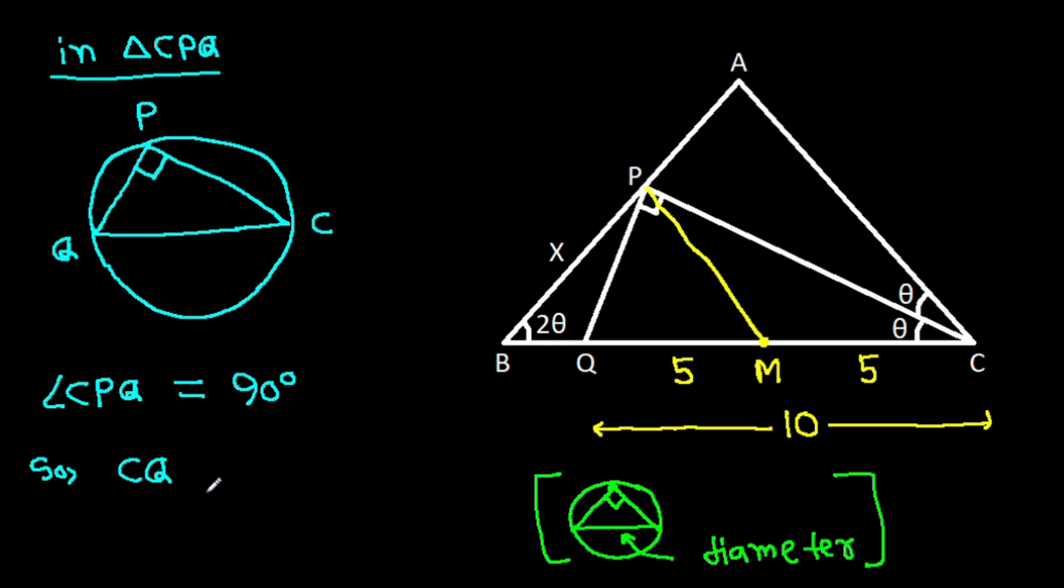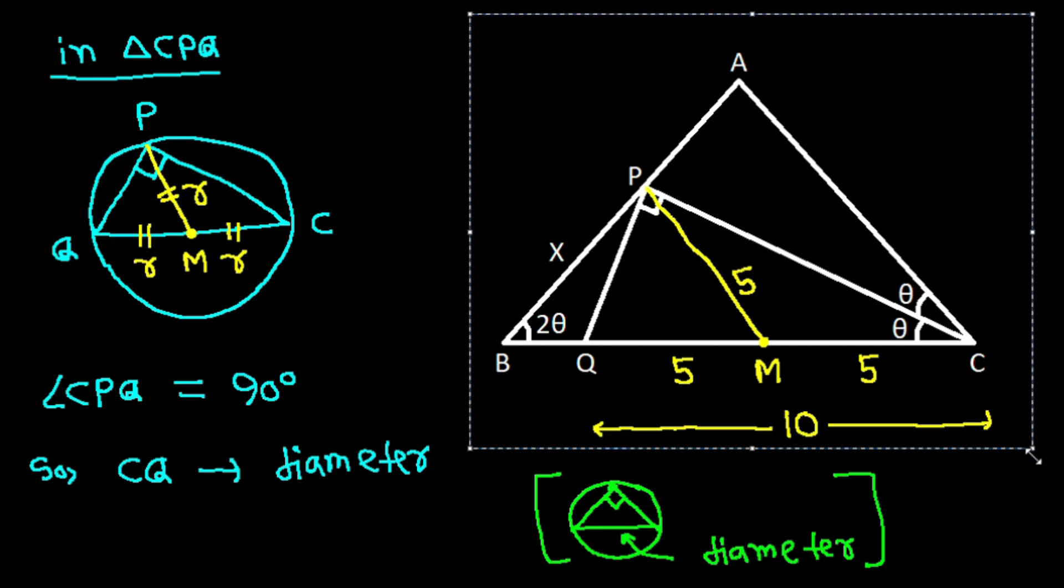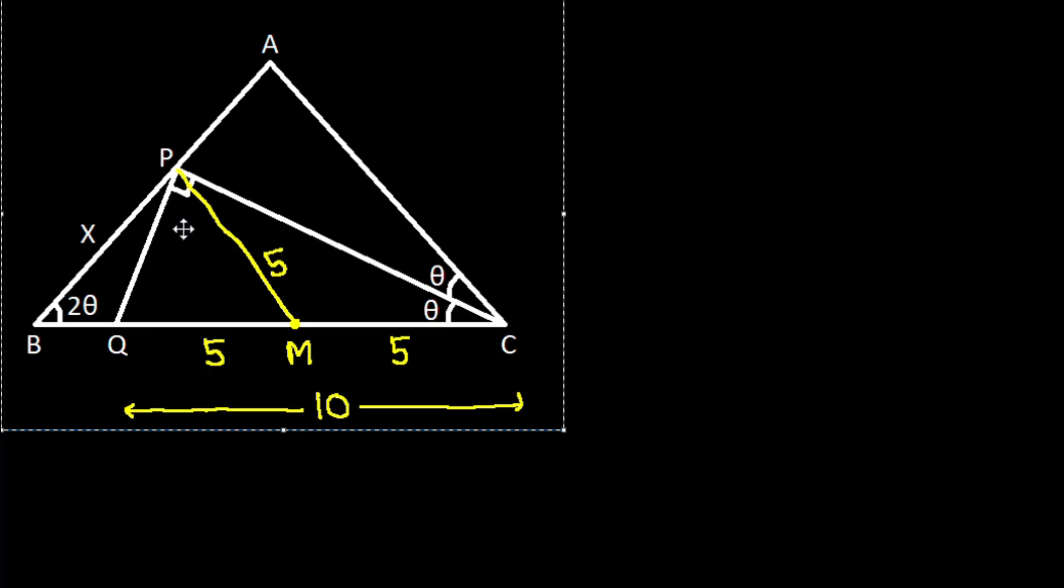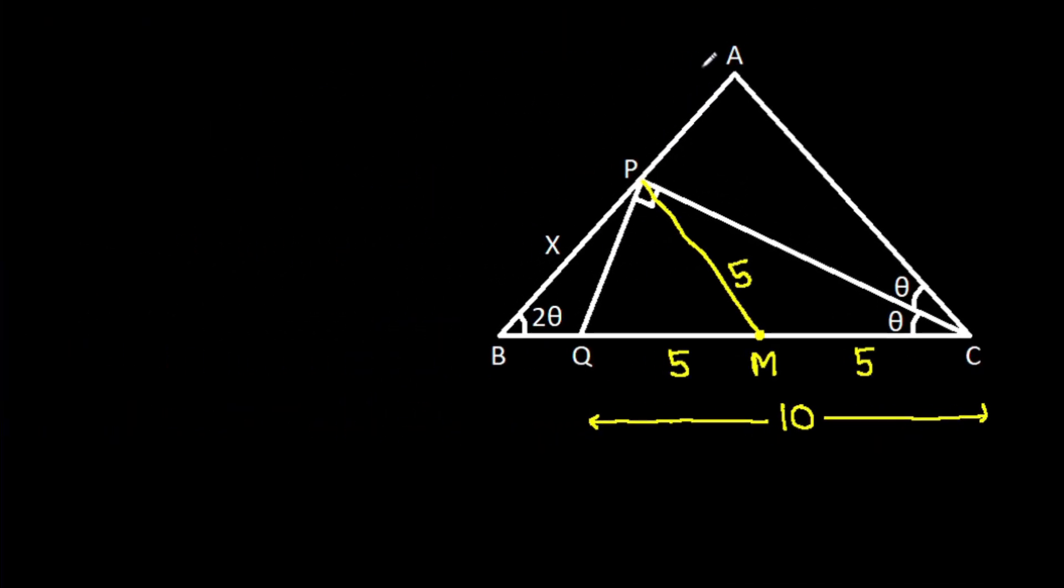So CQ will be diameter, and suppose the center of the circle is M, then CM will be equal to QM that will be equal to PM, that will be radius. And we have CM is 5, QM is 5, so PM will also be 5.